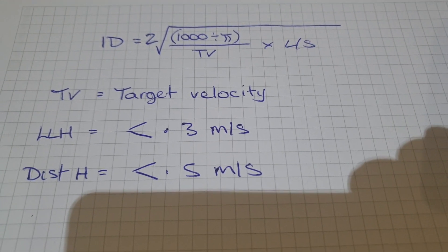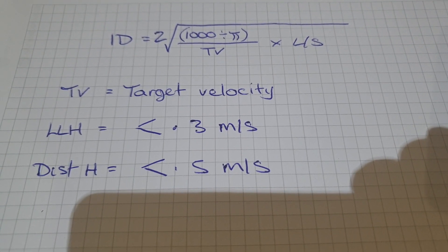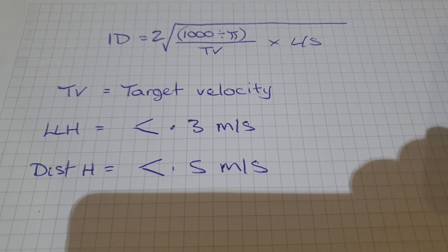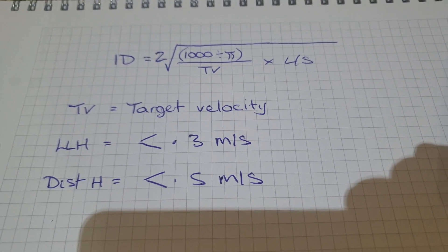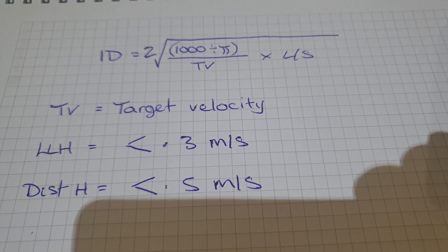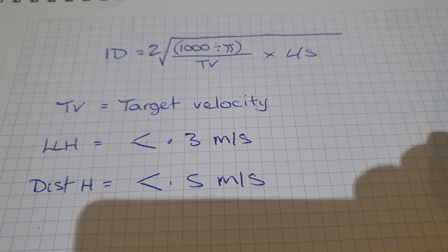So again, that formula is the internal diameter equals 2 times the square root of 1000 divided by pi divided by the target velocity multiplied by the liters per second. I hope that helps.